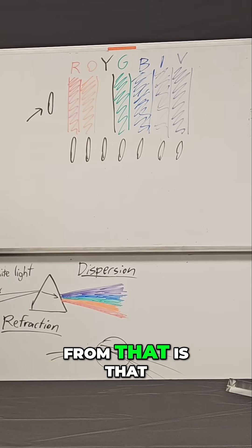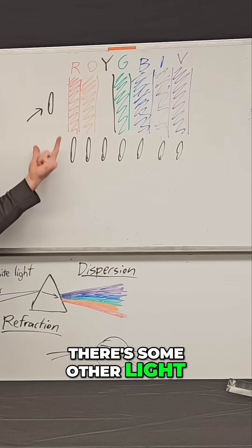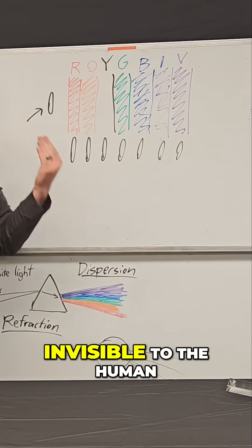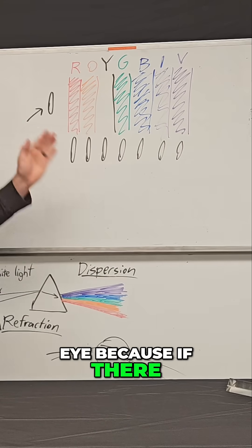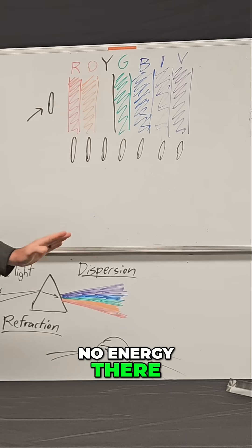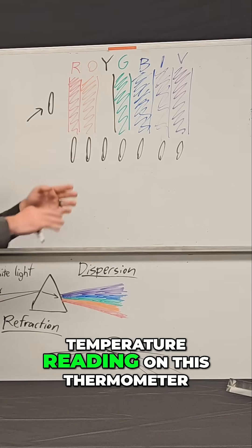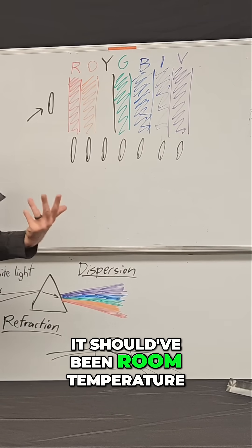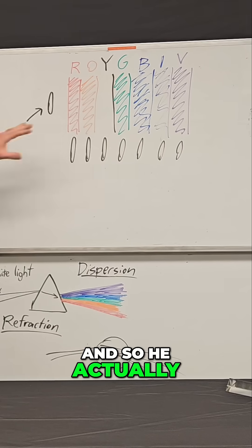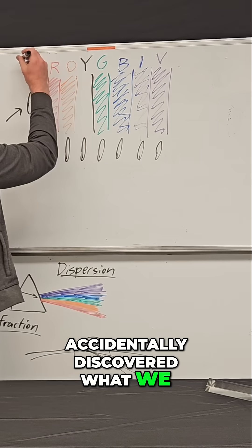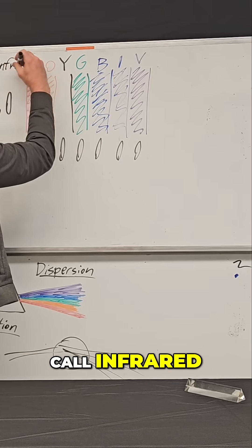And what he concluded from that is that there's some other light beyond red that is invisible to the human eye. Because if there was nothing there, no energy there, there should have been no temperature reading on this thermometer. It should have been room temperature. And so he actually accidentally discovered what we call infrared light.